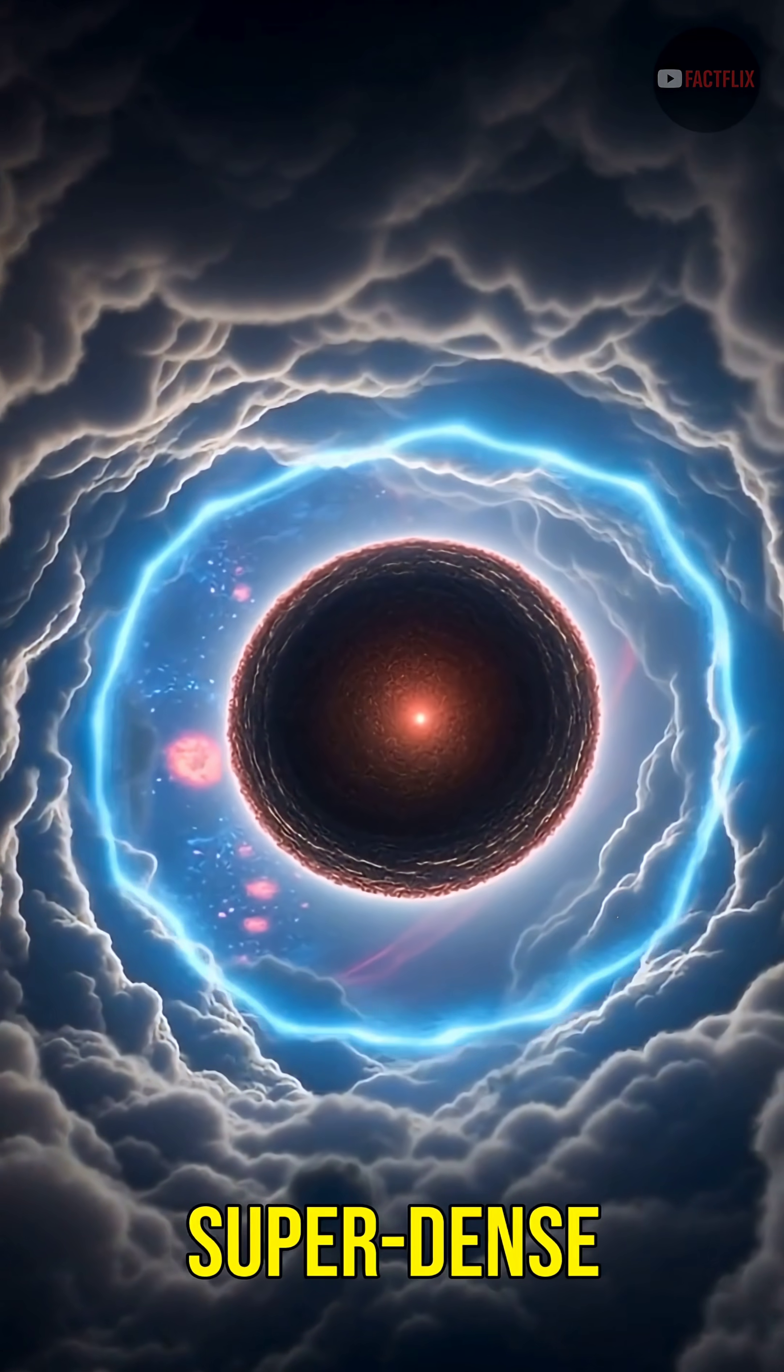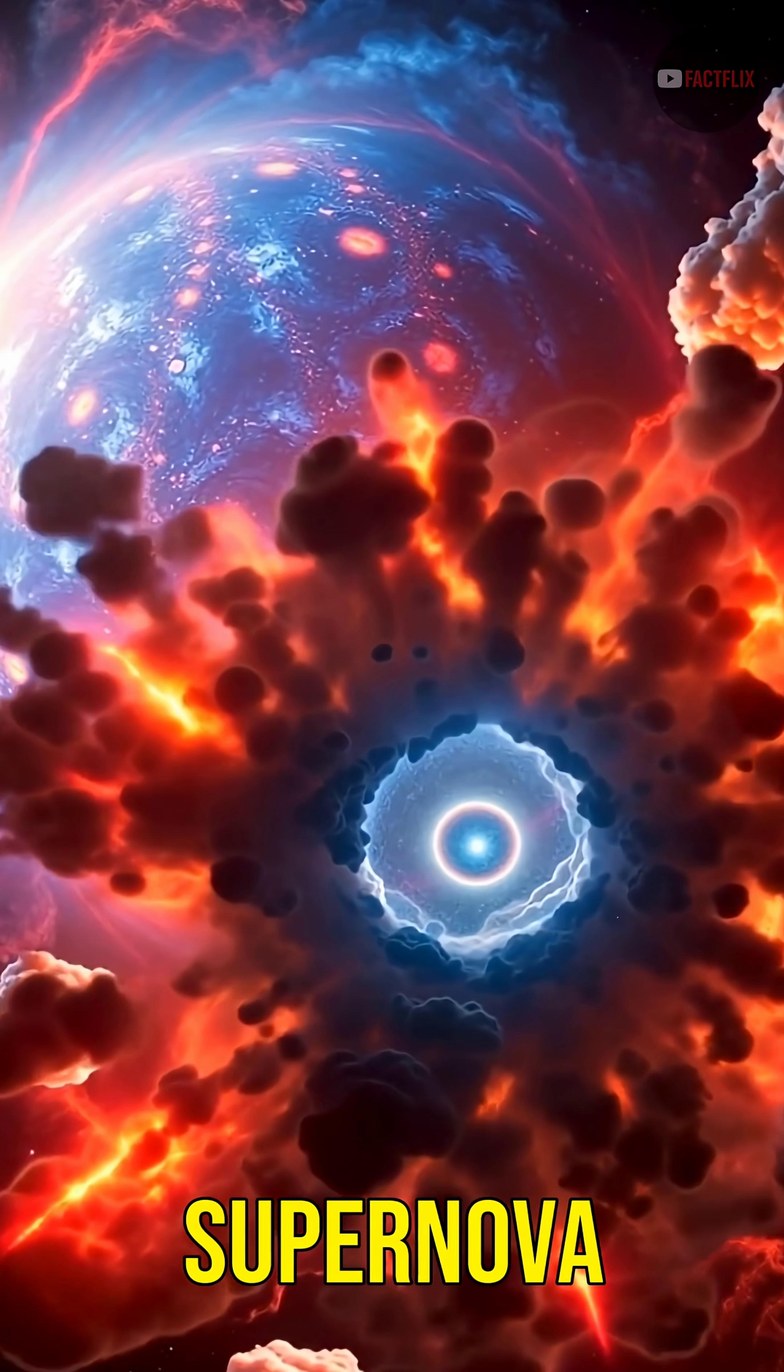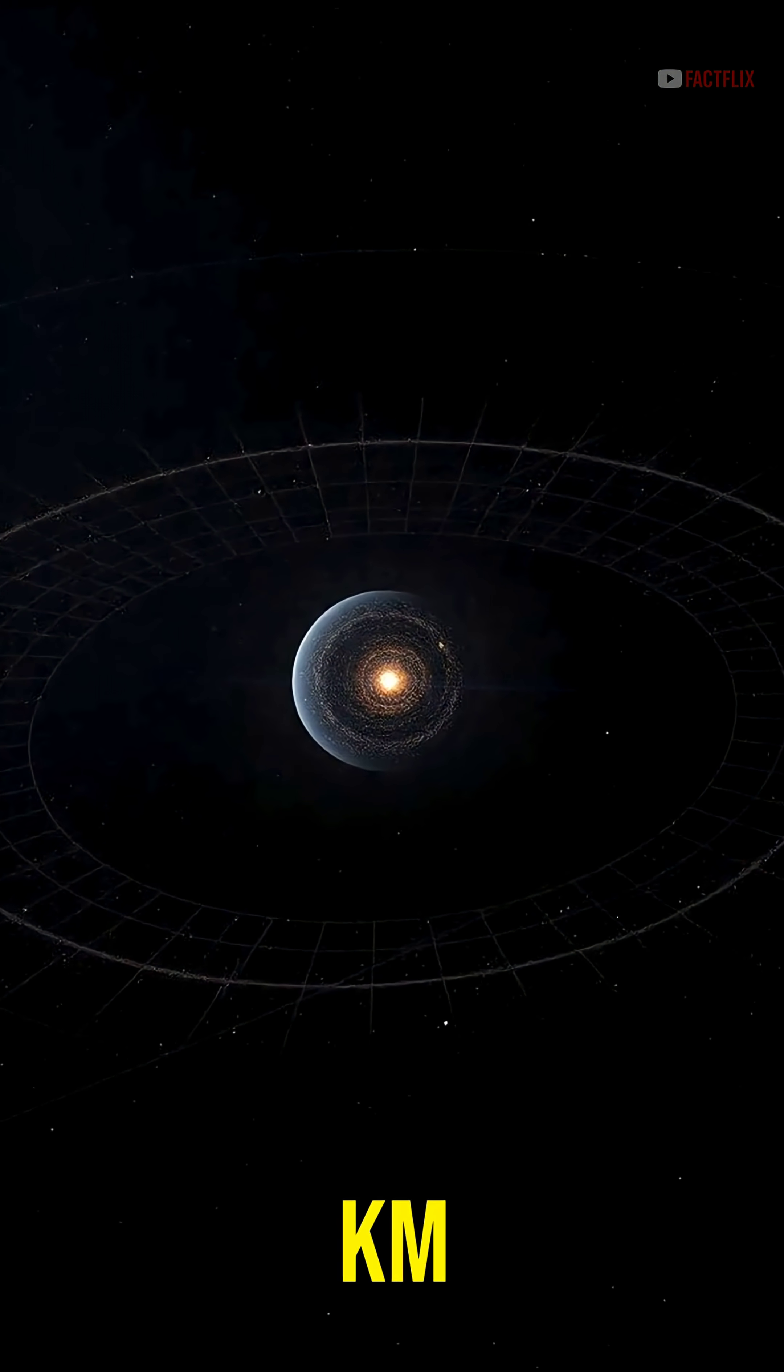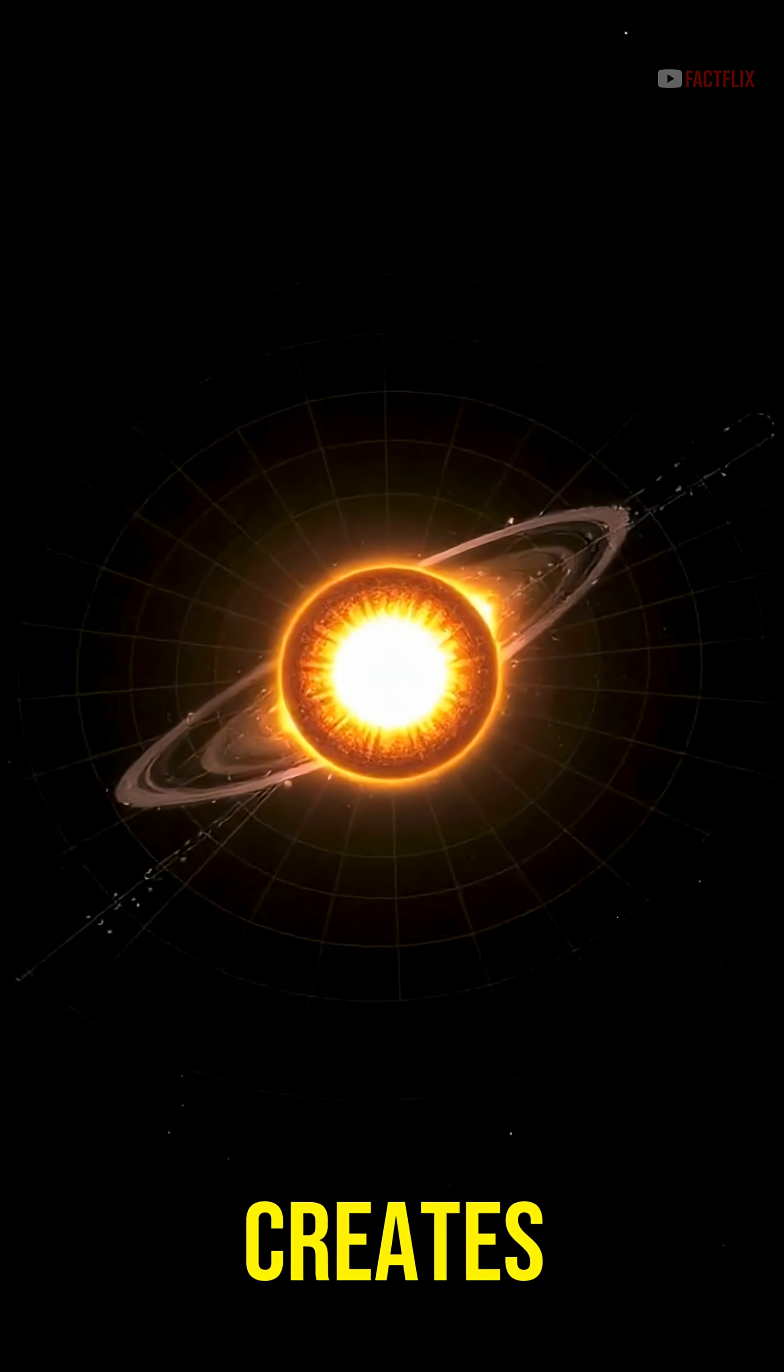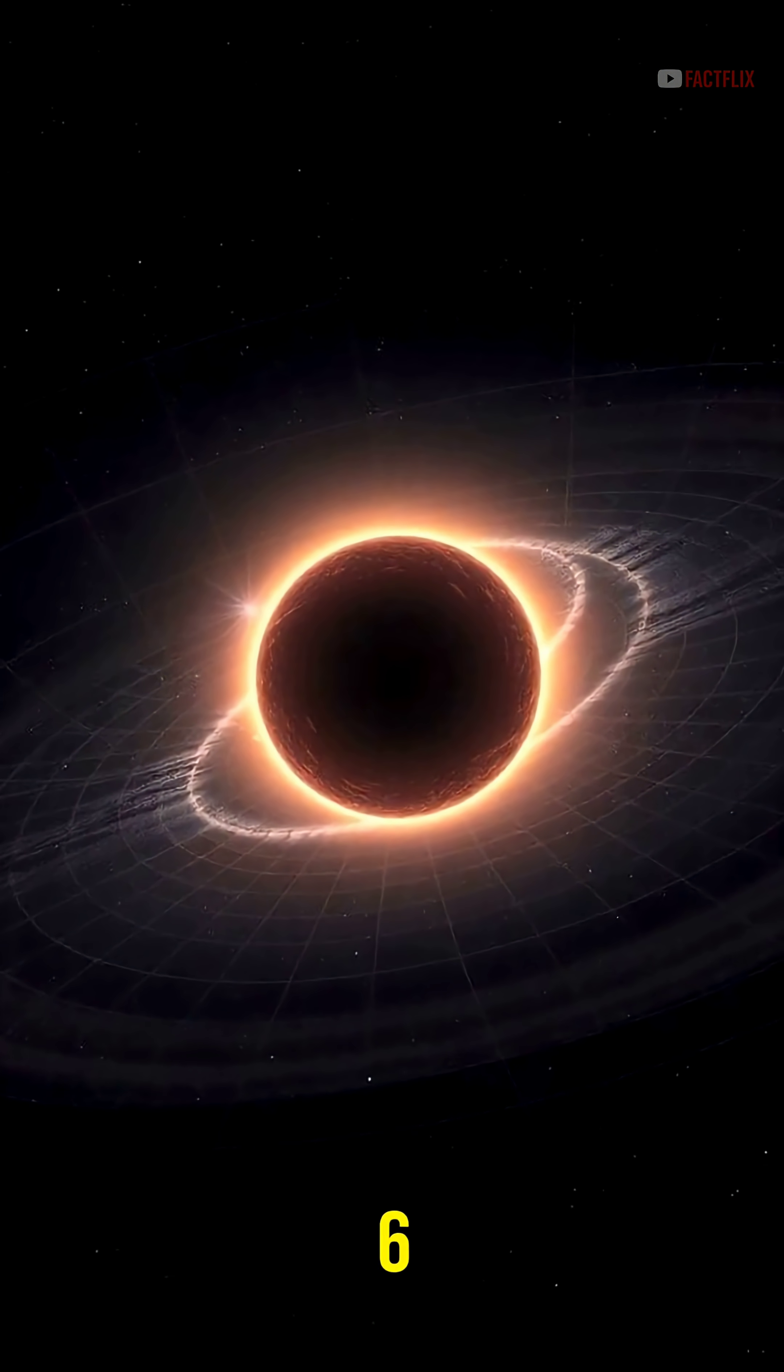Neutron stars are the collapsed, super-dense cores left behind after a massive star explodes in a supernova. They're only about 20 km wide, but insanely heavy. This creates a material so dense that just one teaspoon of it would weigh around 3 to 6 billion tons.